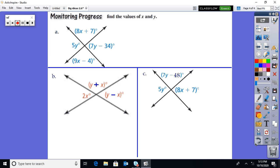So 8x plus 7 would be equal to 9x minus 4. Solve that. Subtract 8x and add 4, so 11 is x. And then I got to do the same thing with the y's across from each other. So 5y has to equal 7y minus 34. Subtract 7y's, I got negative 2y equals negative 34, so y is 17.